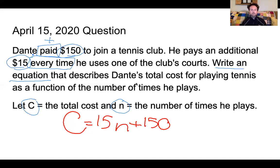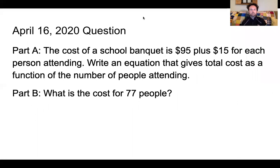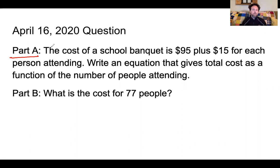Now, to introduce today's question — I'm going to clear all the drawings and move on to the next one. This is a two-parter. For Part A, the cost of a school banquet is $95 plus $15 for each person attending. Write an equation that gives total cost as a function of the number of people attending.